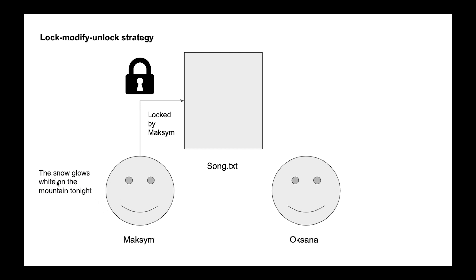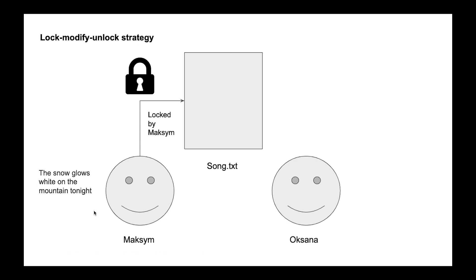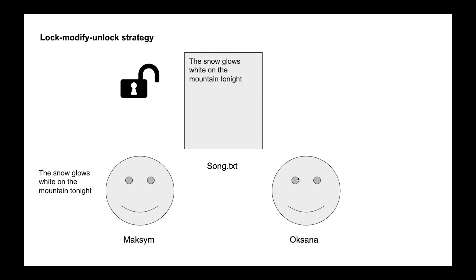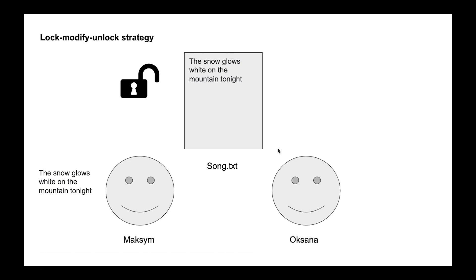Maxim creates the first version of the file — a few lines of code — and then he wants to move these changes to the server. This operation is called a commit. He commits his changes to the server, and after that he can remove the block so other people can update or change the version.